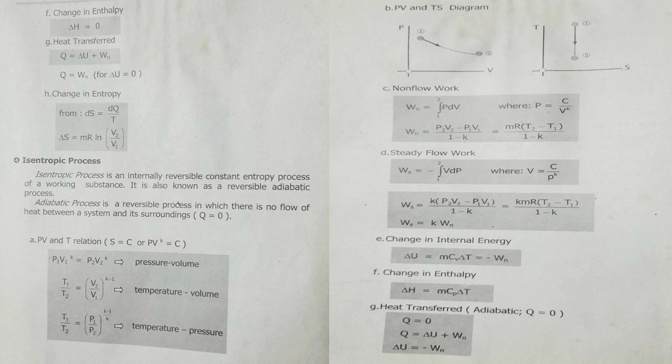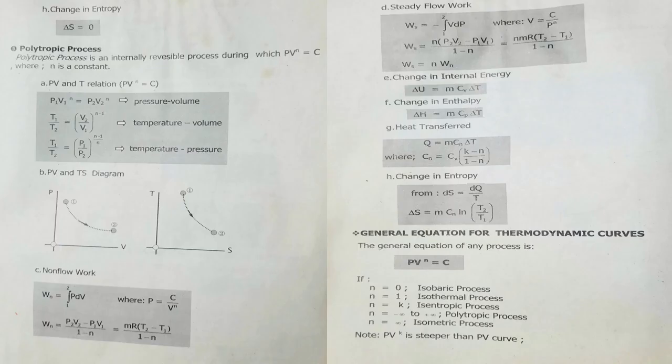Change in internal energy is mCv delta T, or equal to negative non-flow work. Change in enthalpy is mCp delta T. Heat transfer for adiabatic: Q equals 0, and from Q equals change in internal energy plus work, internal energy equals negative non-flow work. Change in entropy is 0, since it is constant entropy.